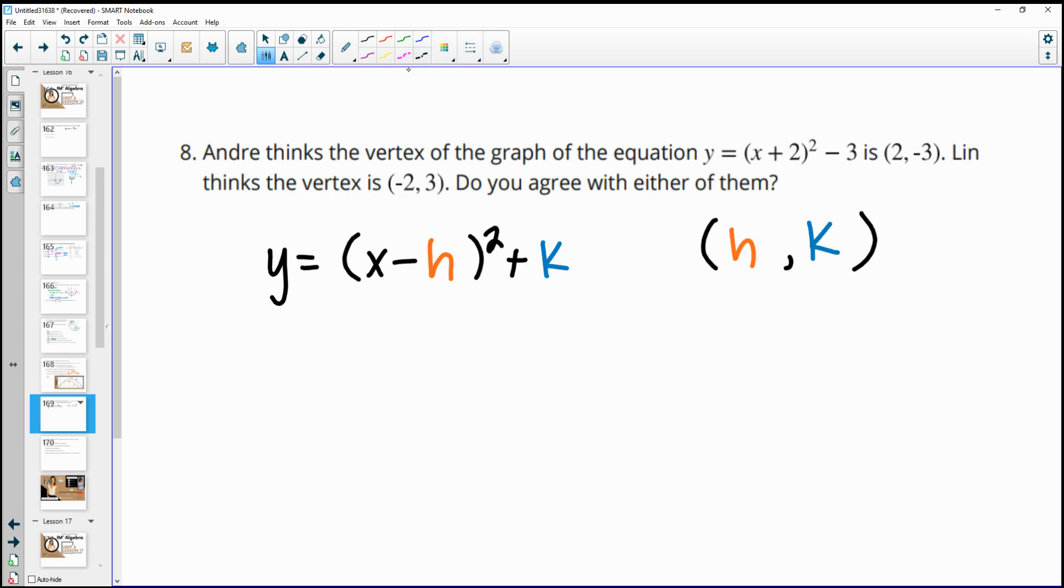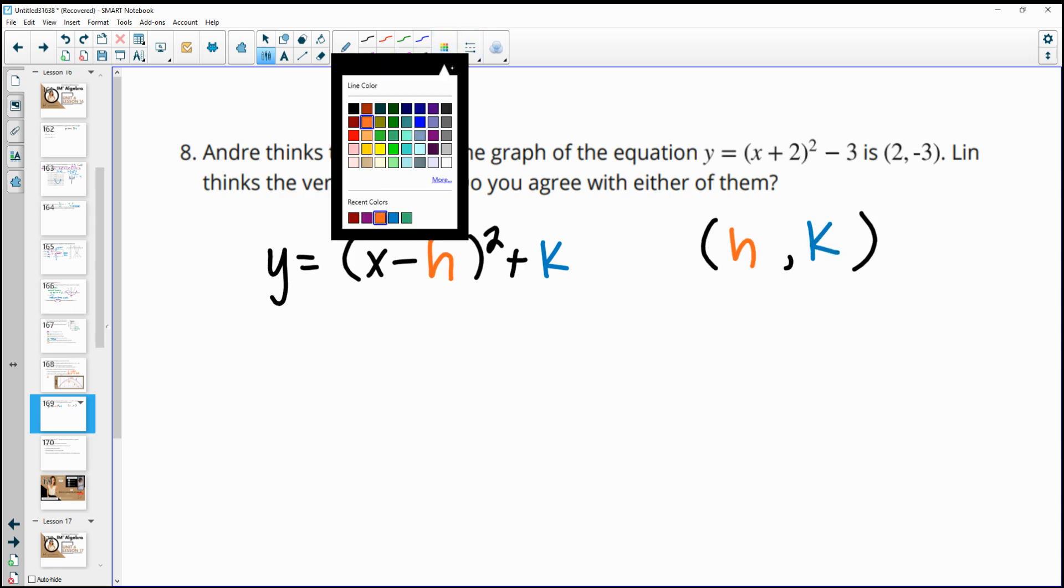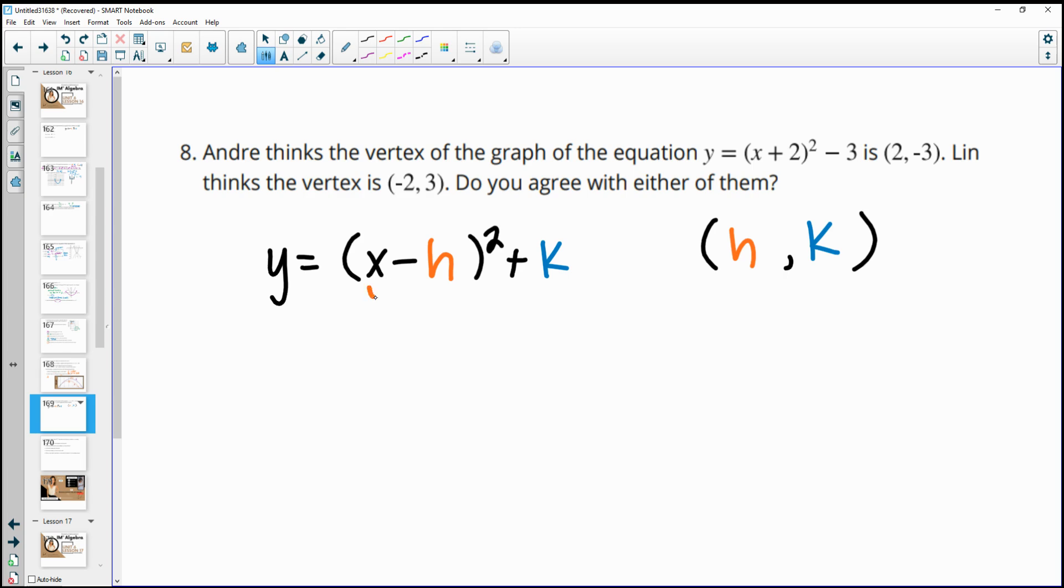And so when we look at this, when we have a minus in our equation here, this is going to look like the opposite of h. So when we look right here, OK, this is actually minusing a negative 2. So our x-coordinate is negative 2.